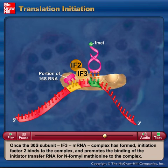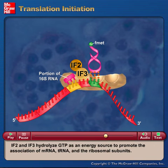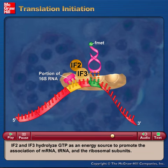IF2 and IF3 hydrolyze GTP as an energy source to promote the association of mRNA, tRNA, and the ribosomal subunits.